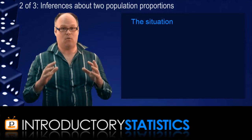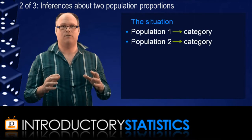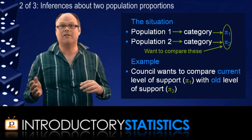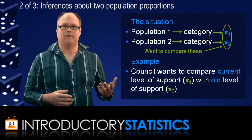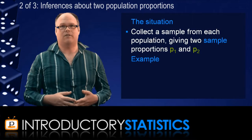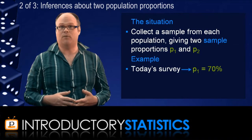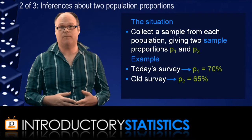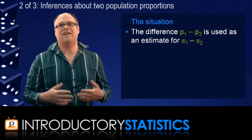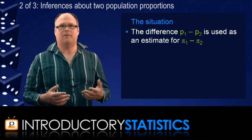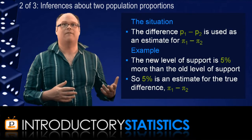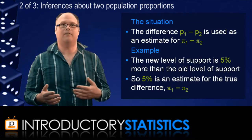Let's be clear about exactly what situation we're in. We want to compare two population proportions from two different categorical populations. In the council survey, the council wants to compare the current level of support for the bridge with the old level of support. We collect a sample from each population and this gives us two sample proportions: the council's survey today gave a sample proportion of 70% support, and the old survey gave 65% support. The difference between these two sample proportions, p1 minus p2, will be used as an estimate for pi1 minus pi2, just like we used p as an estimate for pi. So the 5% difference is our estimate for the true difference in support levels.